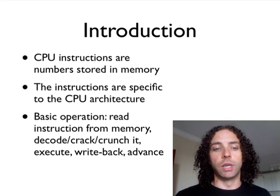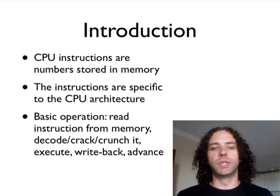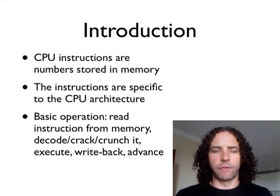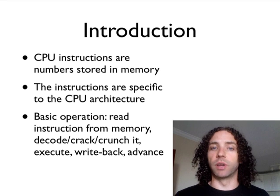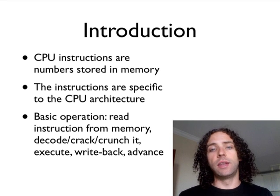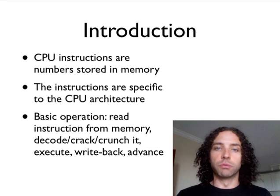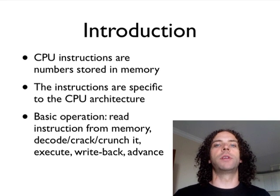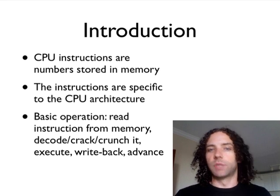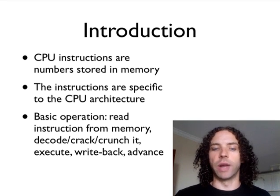The basic operation of how a CPU works is it reads the instructions from memory, it decodes them — or there are other phases called crack or crunch, which are sometimes applied in modern CPUs to break them down to simpler ideas — and then the instruction is executed, the result is written back to memory or to the registers on the CPU, and then it advances to the next instruction. Sometimes that might not be the next instruction; it might be somewhere else — that's what's called a branch.